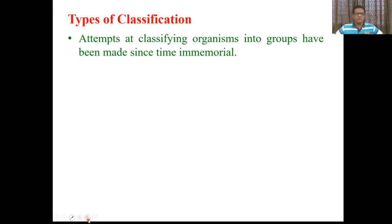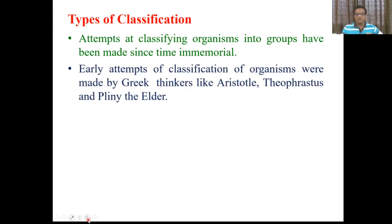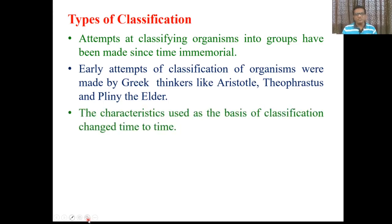Classifications are based on certain characters and characteristics. Attempts at classifying organisms into groups have been made since time immemorial. Early attempts of classification of organisms were made by Greek thinkers like Aristotle, Theophrastus, and Pliny the Elder. Majority of the initial work was done by the Greek people.